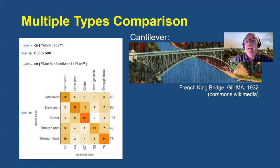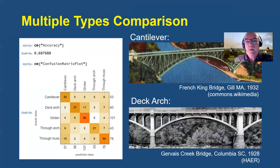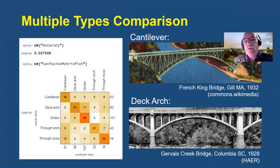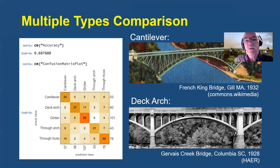Here is an example of a cantilever — this is the 1932 French King Bridge in Massachusetts. And here's a deck arch, the Gervais Creek Bridge in South Carolina. The cantilever bridge has diagonals in the arches, and the verticals over the piers in the deck arch are heavier than they are in the cantilever. But from a distance, these bridges don't actually look all that different.